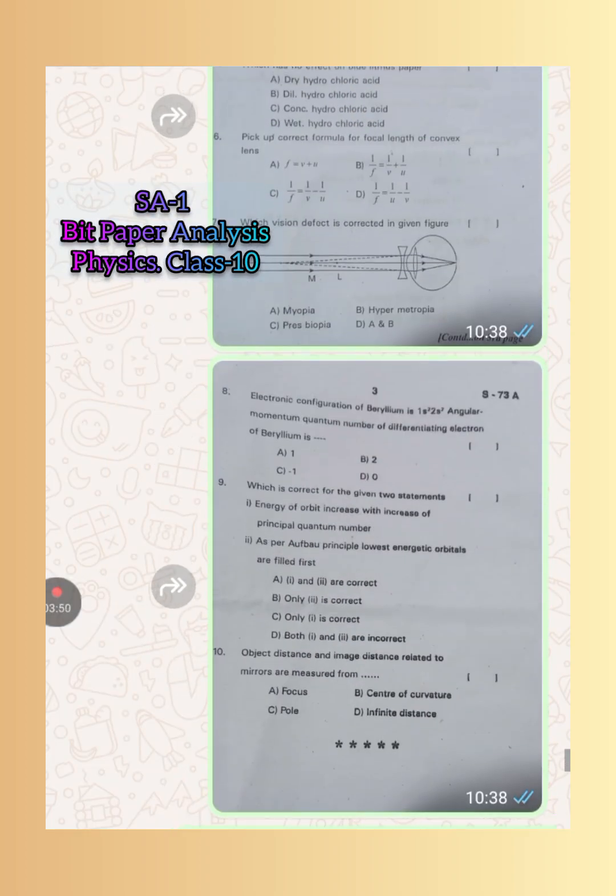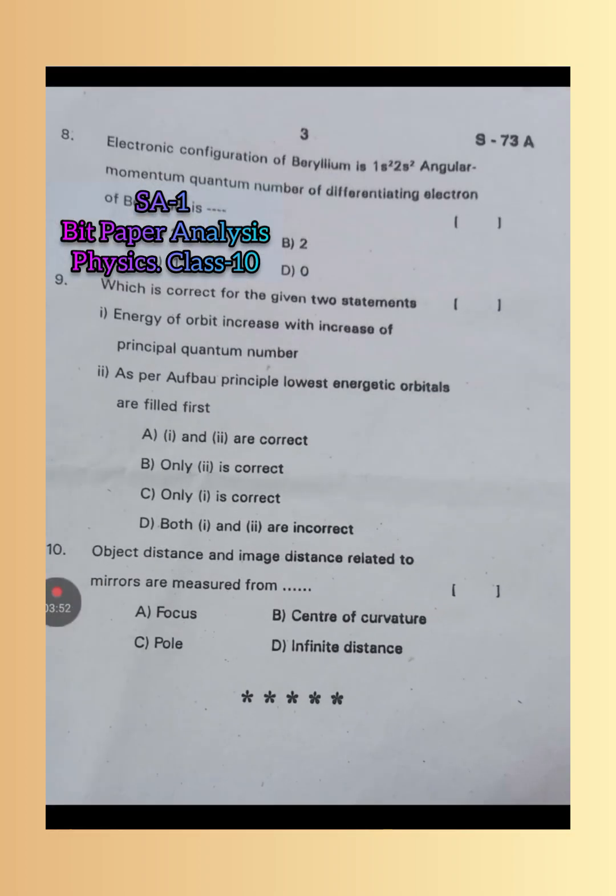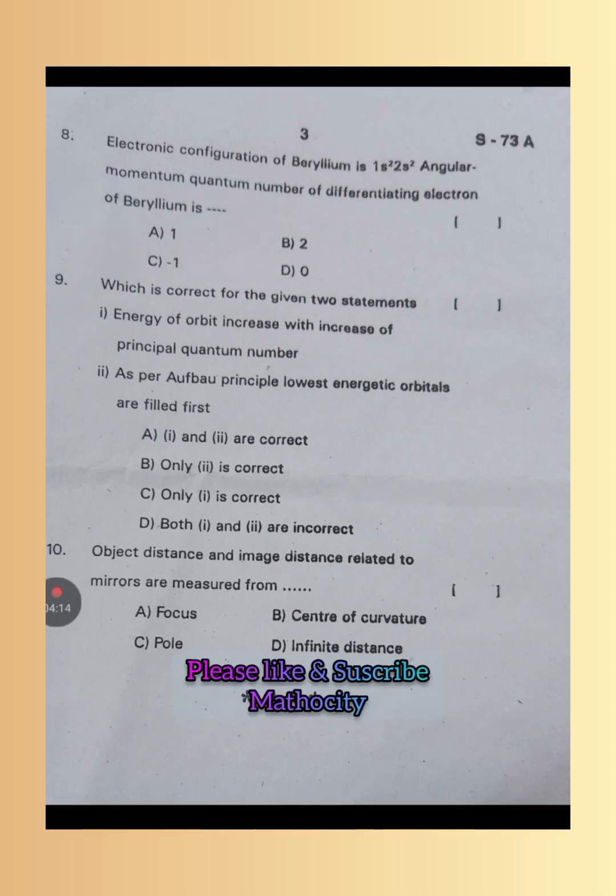Next, let us analyze eighth bit. Electronic configuration of beryllium is 1s² 2s². Angular momentum quantum number of differentiating electron of beryllium is - see, the differentiating electron is entering into s orbital, so the angular momentum quantum number for it is 0. So D is the right answer.